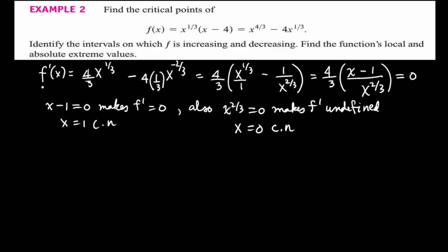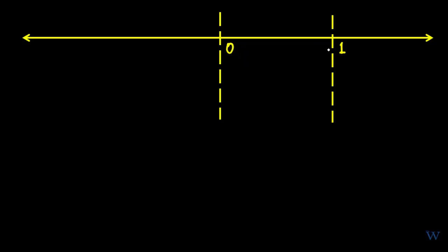With two critical numbers, we subdivide the number line into three sections. We have 0 and 1. We need test points in each interval: how about -1 to the left of 0, one-half between 0 and 1, and 2 to the right of 1. These are arbitrary numbers. Recall that f'(x) = (4/3)·(x - 1)/x^(2/3).